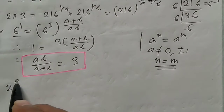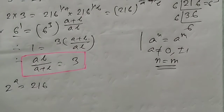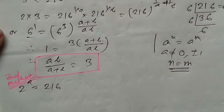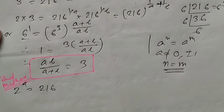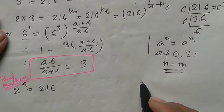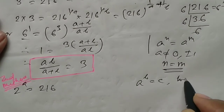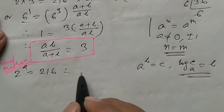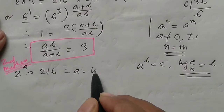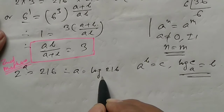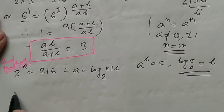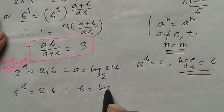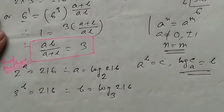Second method using logarithms: from 2 to the power A equals 216, taking log base 2 both sides gives A equals log 216 to the base 2. Similarly, 3 to the power B equals 216 gives B equals log 216 to the base 3.